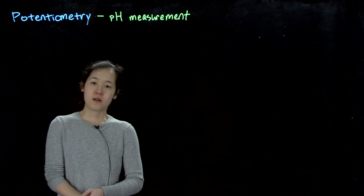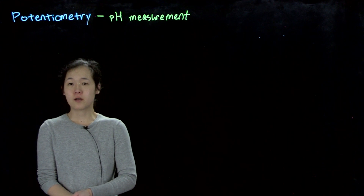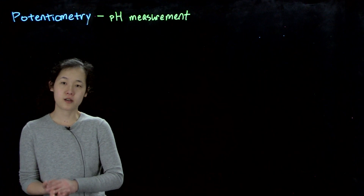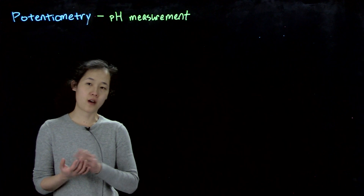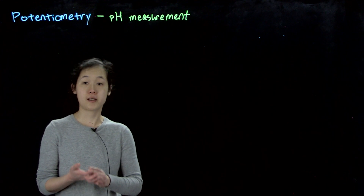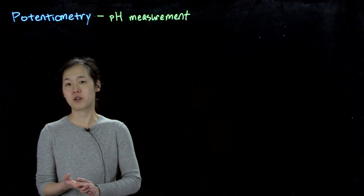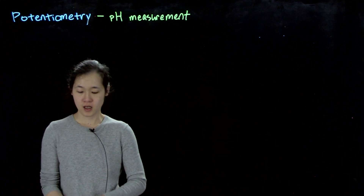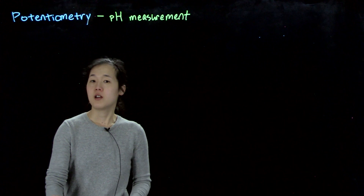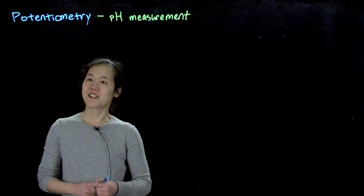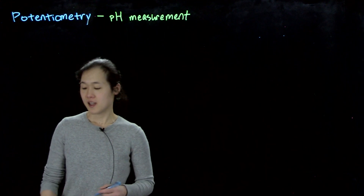At the end of my last video, I alluded to the fact that we could use inert electrodes to measure other half-reactions as the indicator electrode during potentiometry measurements. So I should explain how that works.